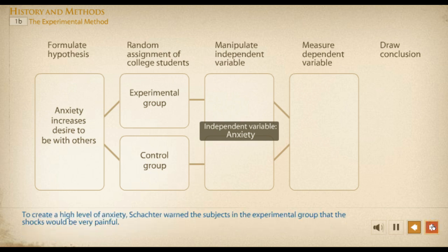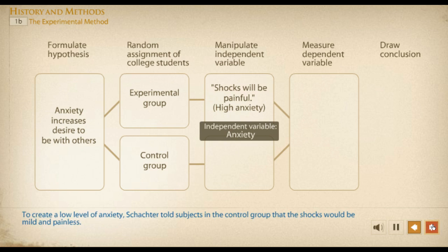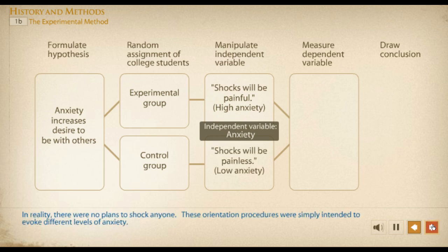To create a high level of anxiety, Schachter warned the subjects in the experimental group that the shocks would be very painful. To create a low level of anxiety, Schachter told subjects in the control group that the shocks would be mild and painless. In reality, there were no plans to shock anyone. These orientation procedures were simply intended to evoke different levels of anxiety.